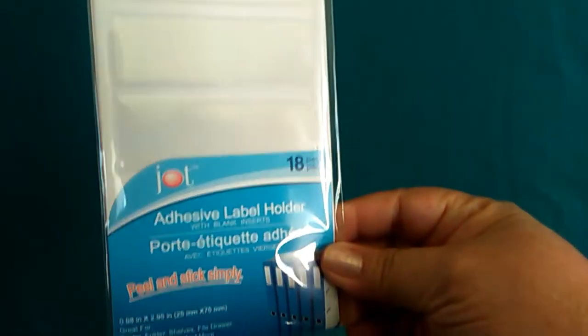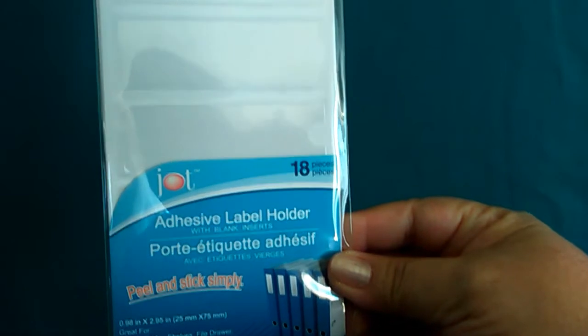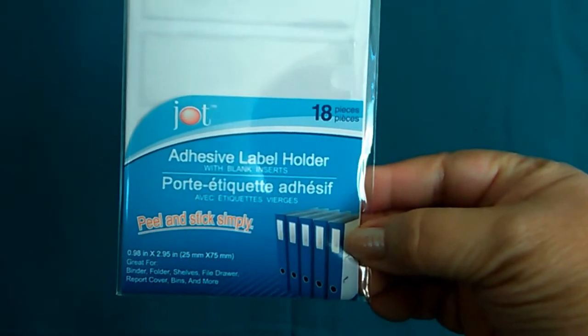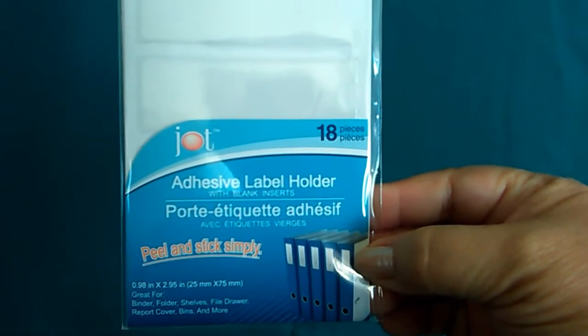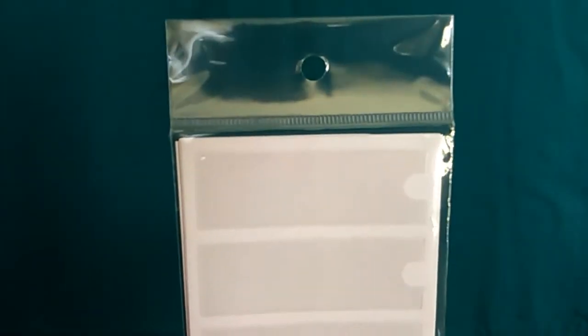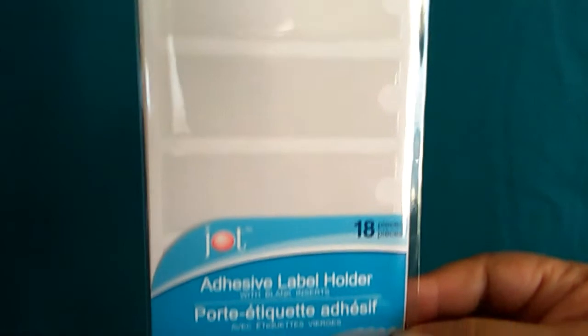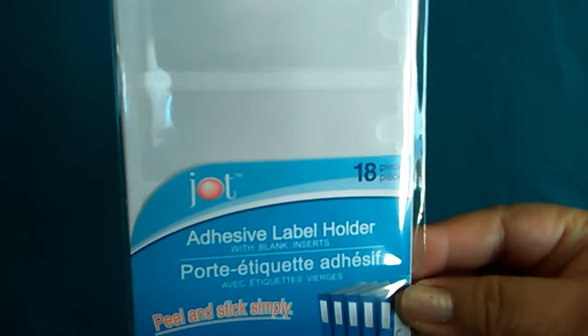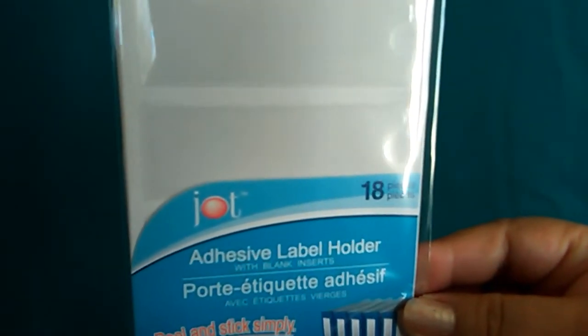But the next item is adhesive label holders. Peel and stick. Simply see the notebooks down there. You can put the label holder there and then just stick a paper label in there, and you pull them out when you want to interchange them. But I thought those would be good to have since I'm organizing and reorganizing my crafts all the time. Instead of pulling stickers off and on, I can just change them out in the label holders.